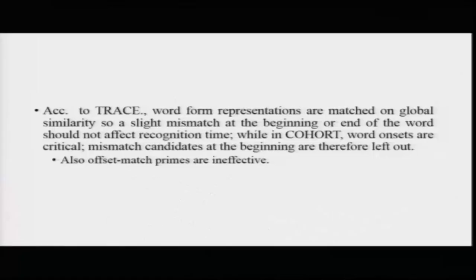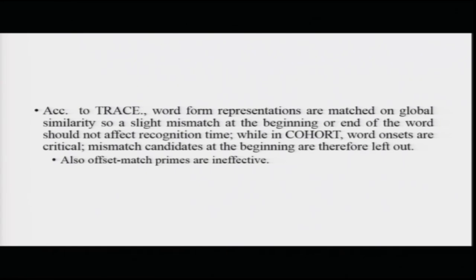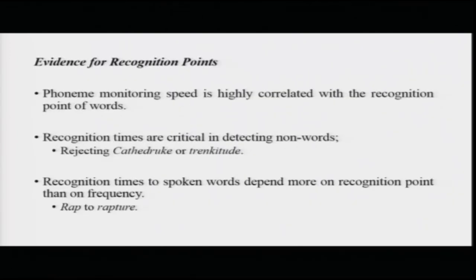According to the trace model, word form representations are matched on global similarity, so a slight mismatch at the beginning or end should not matter much since the entire word is present at once visually. However, in the cohort model the signal unfolds in time, so a mismatch at the beginning can lead to a very different word. A mismatch in the middle or end causes less disruption. Onset mismatches were found to be more disruptive compared to middle or offset mismatches in the cohort model.